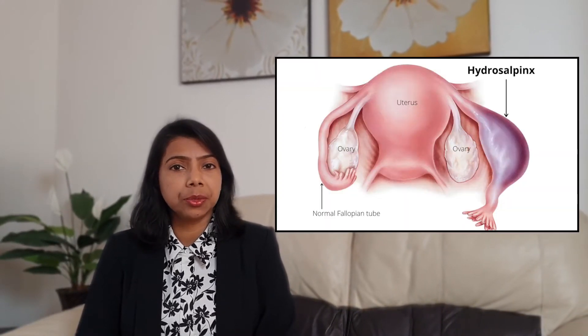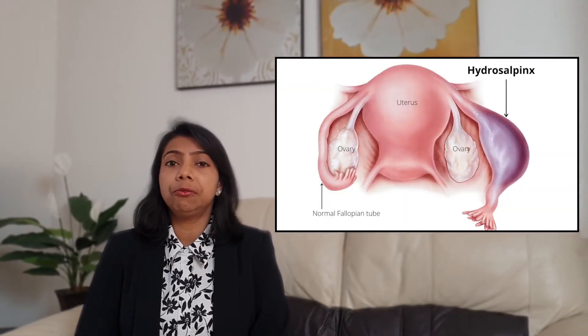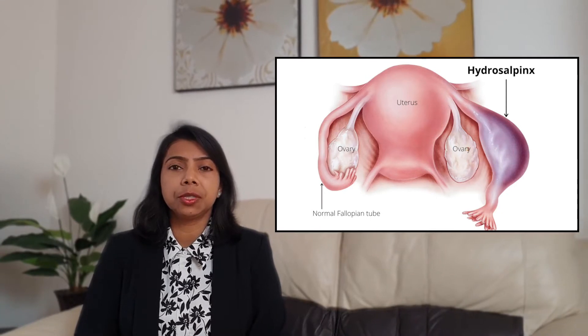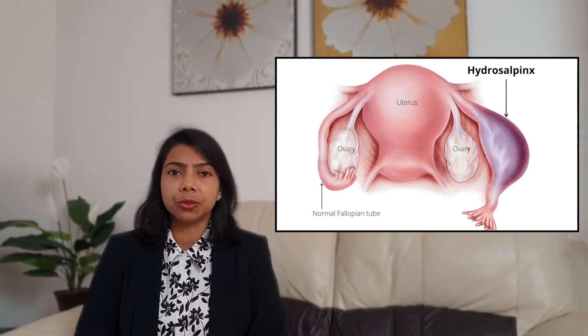Tubal damage does not give you any symptoms. It is usually diagnosed at the time of investigation for infertility. You may have symptoms due to the factors causing tubal damage, like pelvic inflammatory disease or endometriosis. Occasionally, if you have hydrosalpinx or a swollen tube, the fluid from the hydrosalpinx can trickle back into the uterus and give you vaginal discharge.